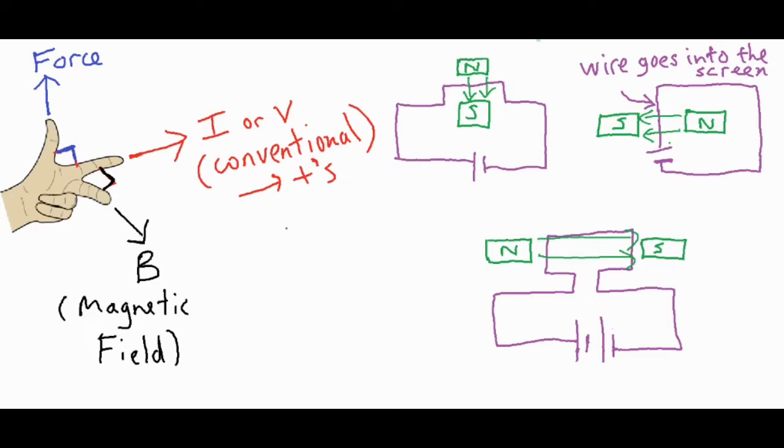Secondly, the next thing I'm going to draw is the current. Fleming's left hand rule has our pointer finger pointing in the direction of the conventional current. This is the positive end of my battery here, so it's flowing in this direction.